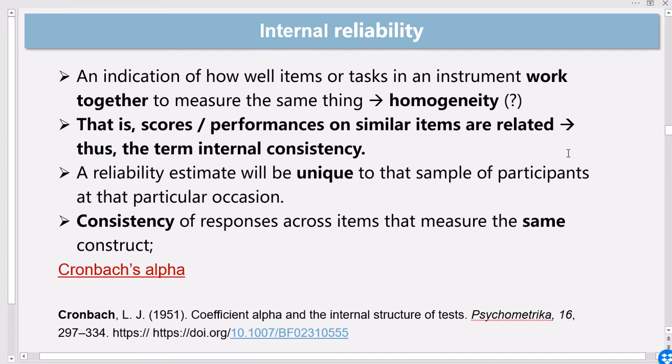Cronbach's alpha is one of the most commonly used methods of estimating internal consistency, which was developed by Cronbach in 1951 in his paper called 'Coefficient Alpha and the Internal Structure of Tests,' which was published in Psychometrika. It has been a very influential paper.